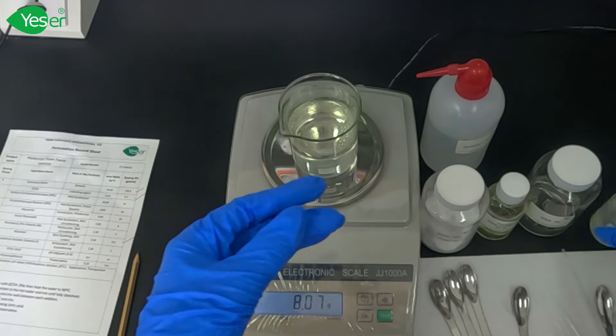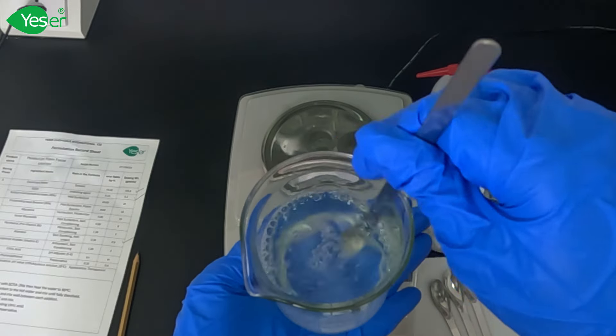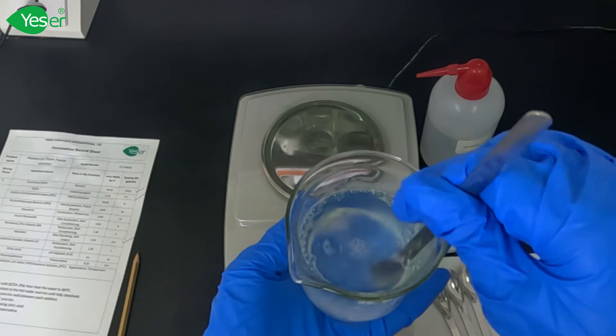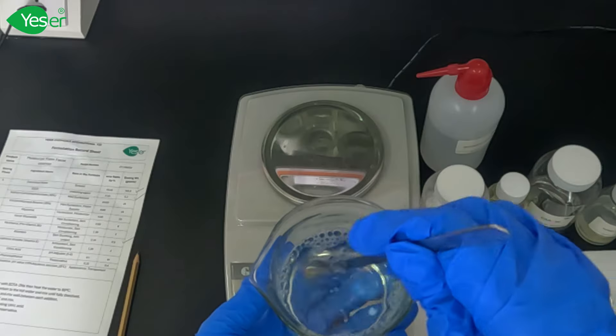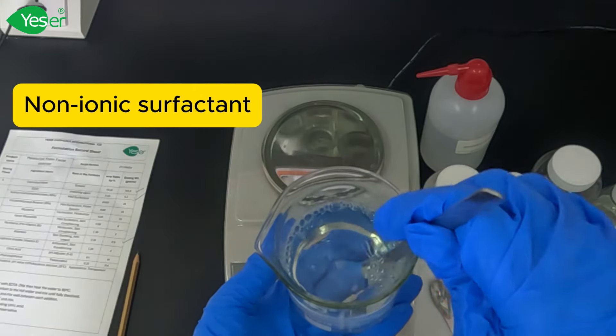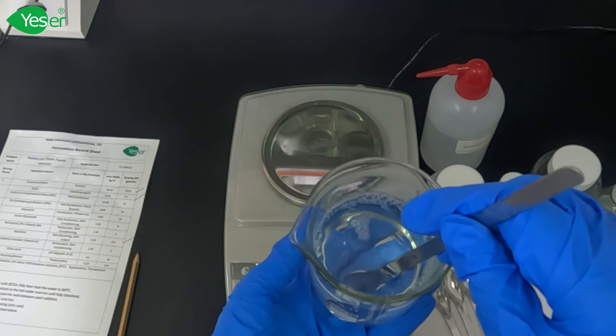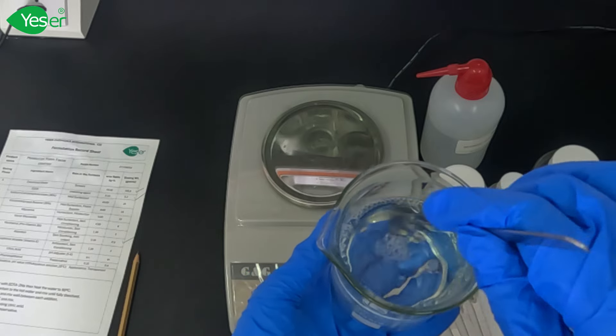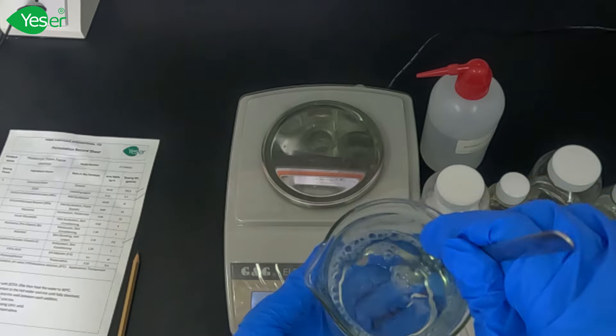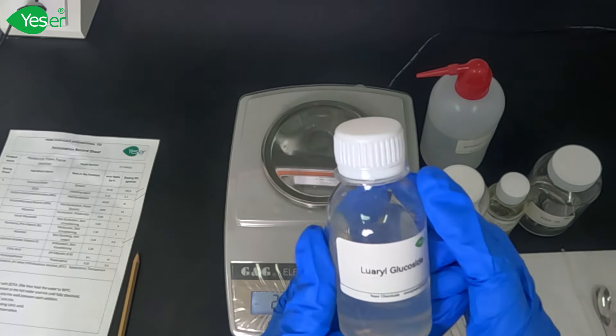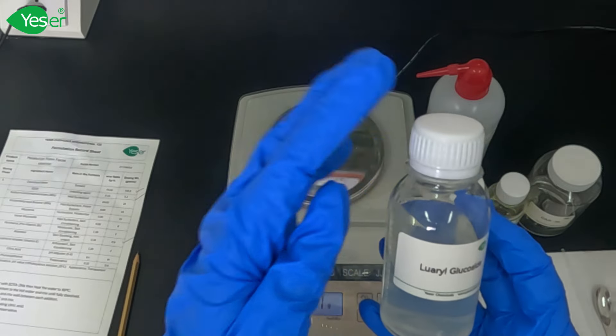After our CAB35 is fully dissolved and mixed, we're going to go further. We're also going to talk a little bit about lauryl glucoside, its roles and features. It's a non-ionic surfactant derived from natural sources such as coconut oil and glucose. It's commonly used in personal care products due to its gentle and effective cleansing properties.